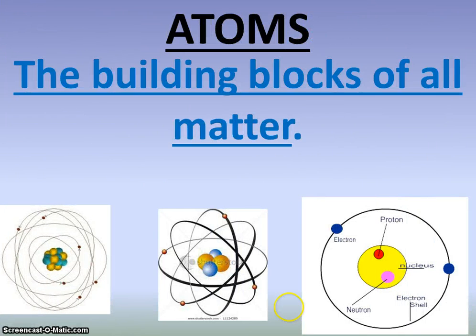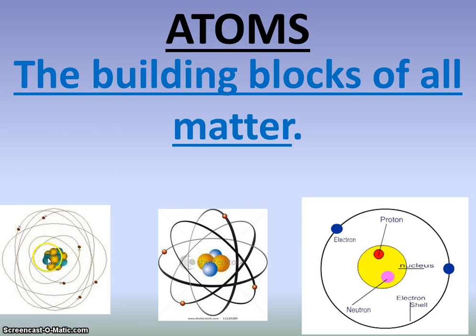Let's talk about atoms — the building blocks of all matter. Atoms are what everything is made of; the smallest pieces of us are atoms. We have several pictures here of atoms. You can see the atom here — this would be the nucleus of the atom, and then here are things orbiting that atom that we will talk about very soon.